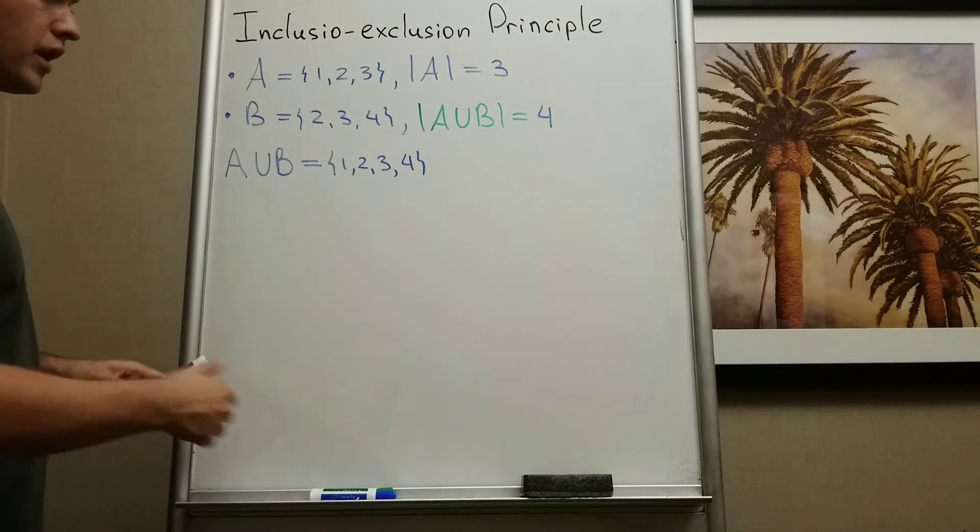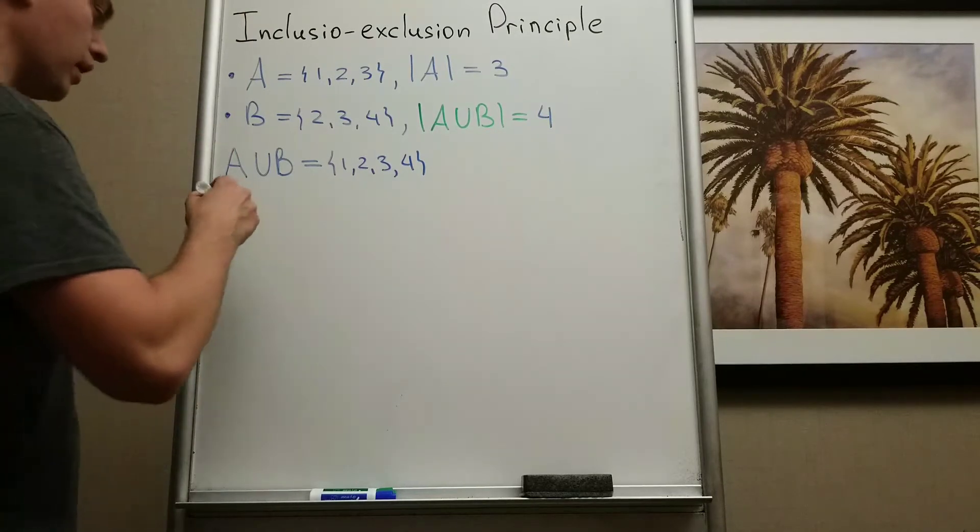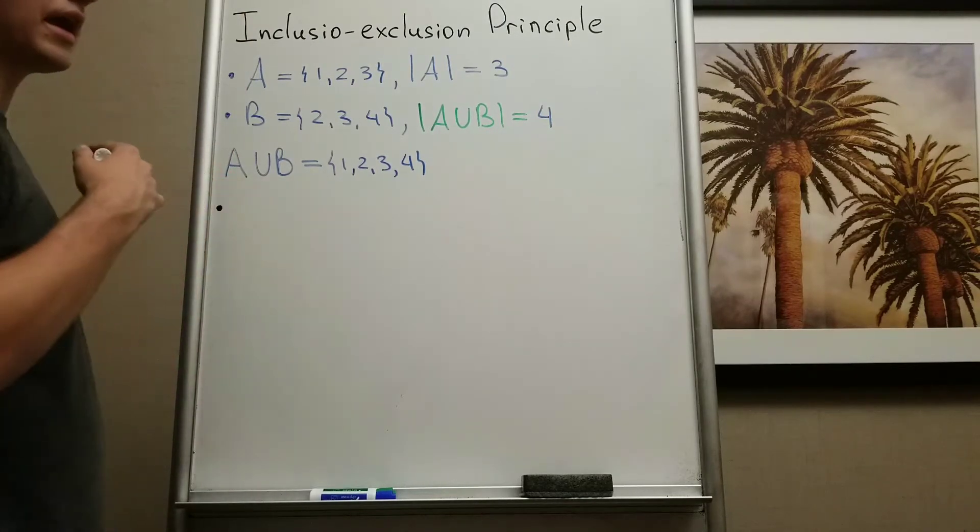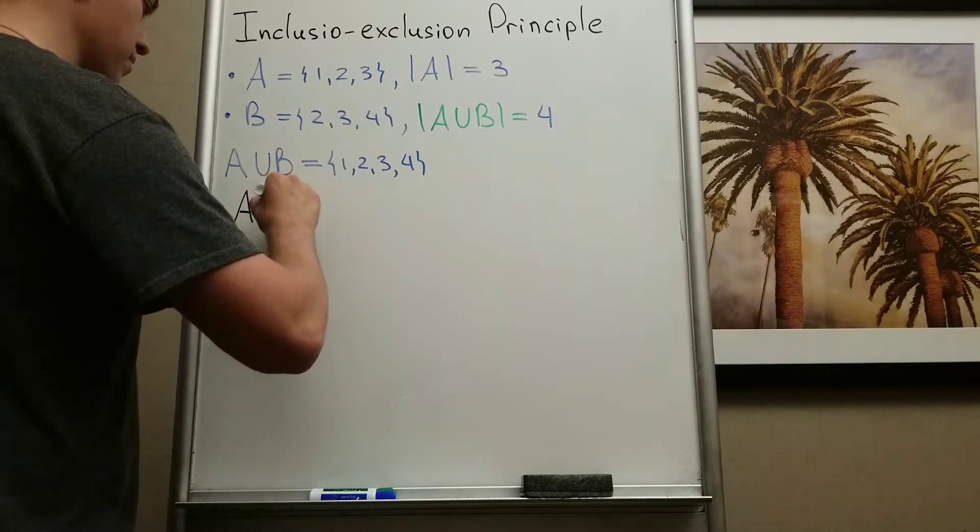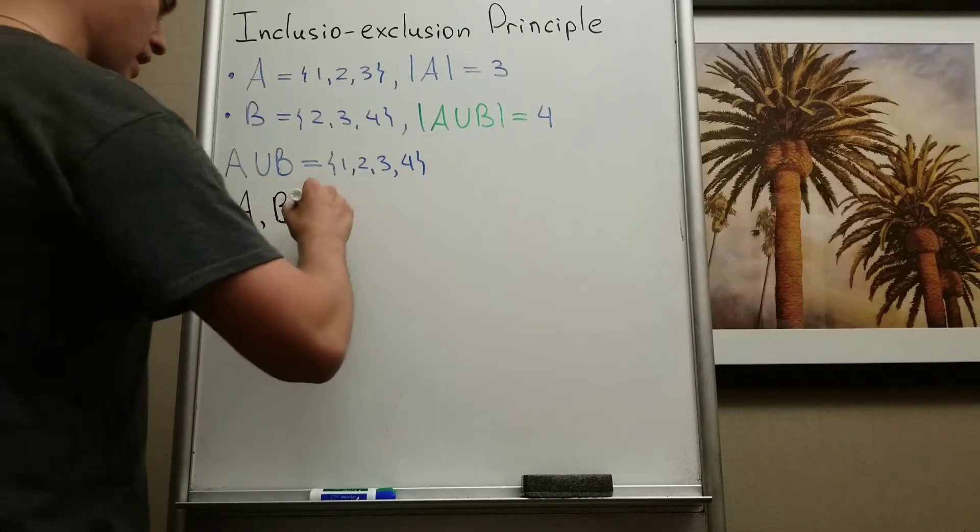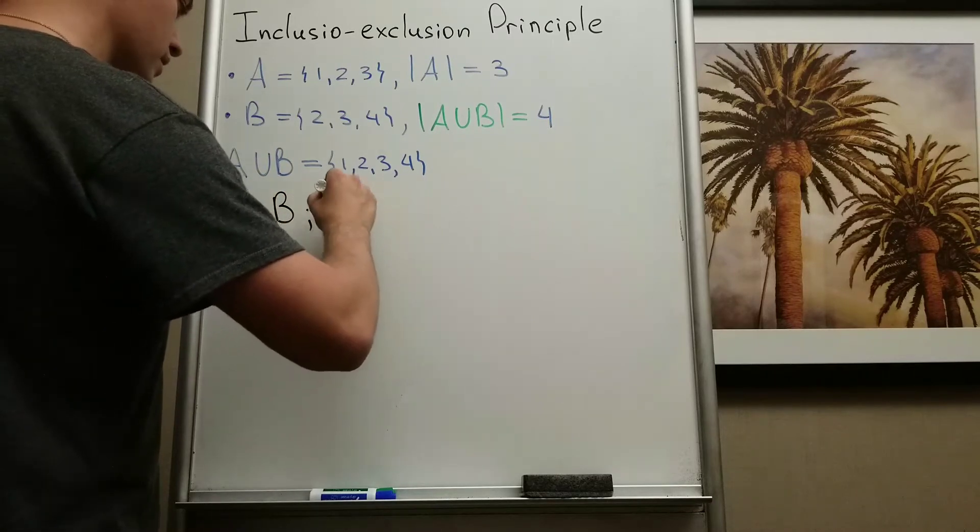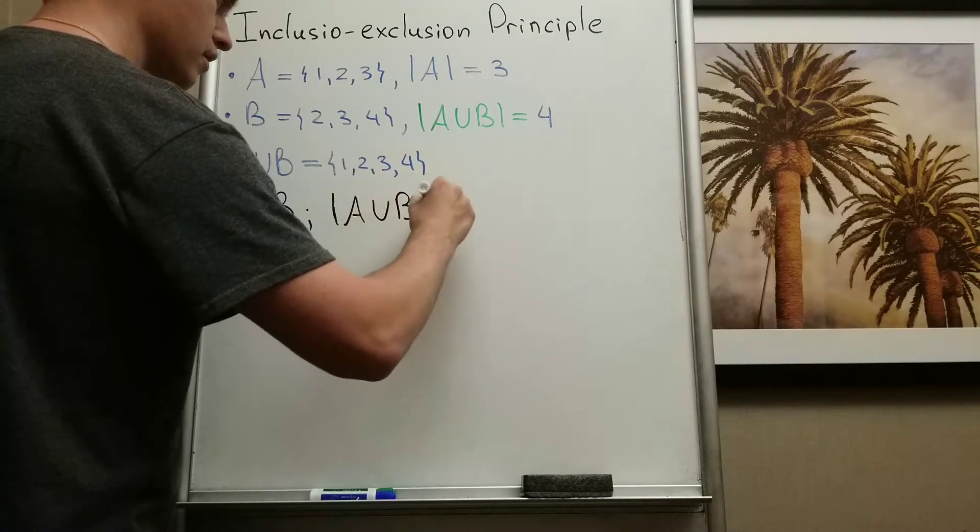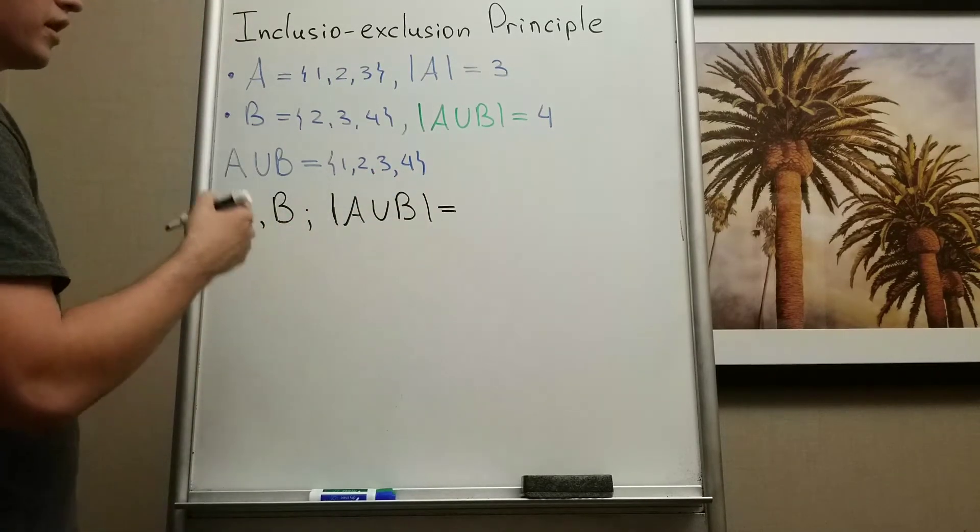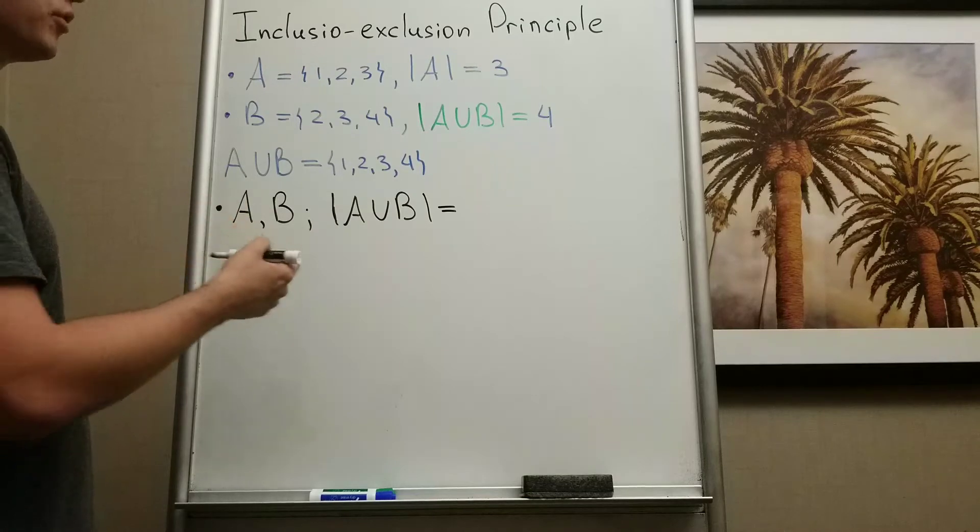Okay, you can ask me in this example it was one particular example. But what if I'm given any two finite subsets A and B? And I'm interested to find the formula, what is |A∪B|? So this is the inclusion-exclusion principle for two sets.